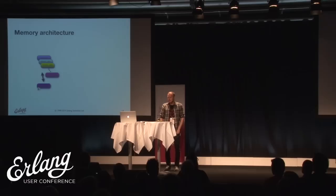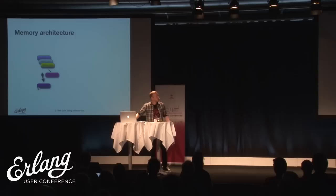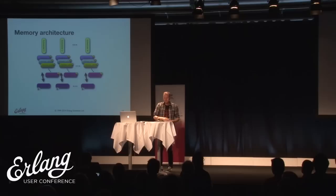Putting all the pieces together for the basic memory architecture: per scheduler, we have the different allocator types feeding into the mseg_alloc at the bottom. There is one parallel track for each scheduler, so every scheduler has its own allocators - making it a lock-free algorithm. When a scheduler needs to allocate something, it requests from its own allocator, goes down, takes the memory, and returns it without needing any locks at all.